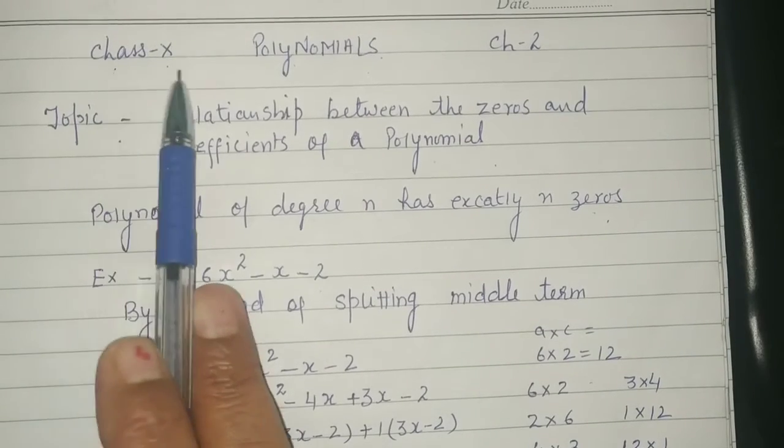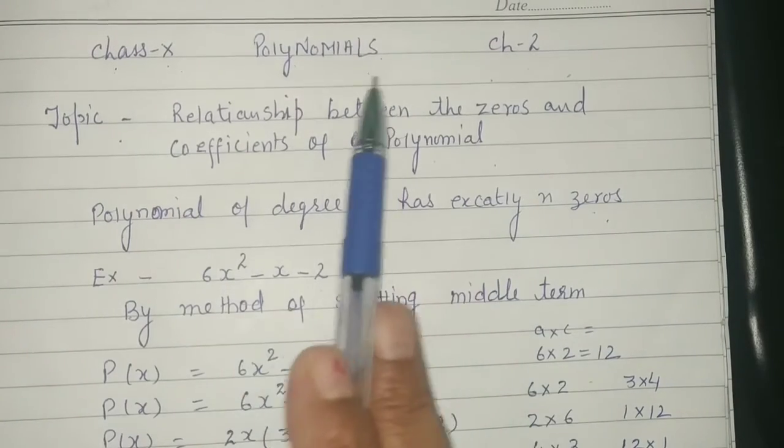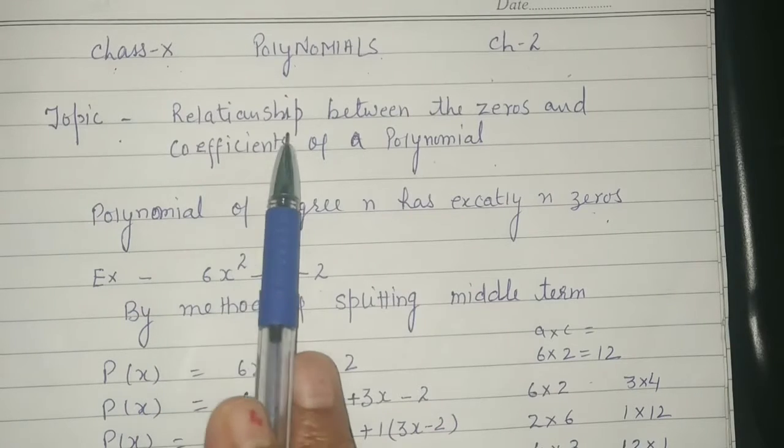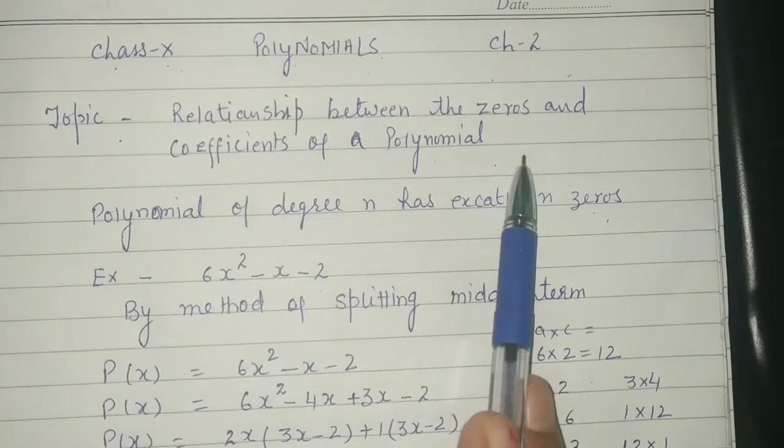Today I am going to discuss class 10, chapter 2, polynomial. Today's topic is relationship between the zeros and coefficients of a polynomial.